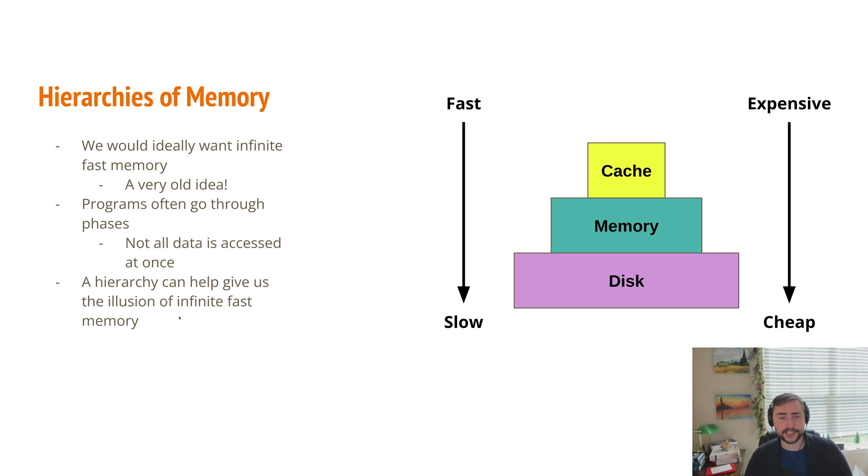So we can use hierarchies of memory, memories of different performance and different cost to get the illusion of infinite fast memory. So on the right-hand side here, we typically have at the very top of this hierarchy, we have our fast, expensive memory, like caches, and we'll have a small amount of it. And then as we go down the hierarchy, we get a memory that's cheaper, but slower, so like DRAM, and then getting all the way down to our slow, cheap memory, like disks.